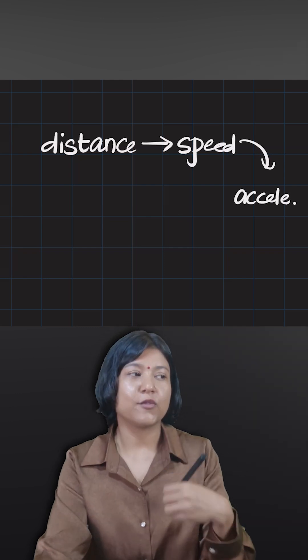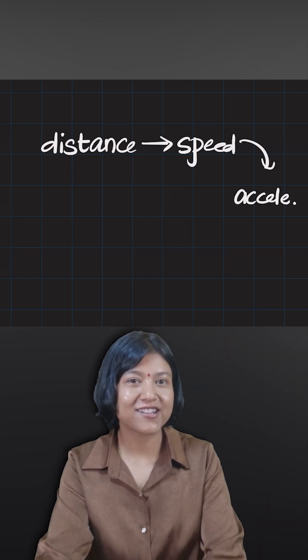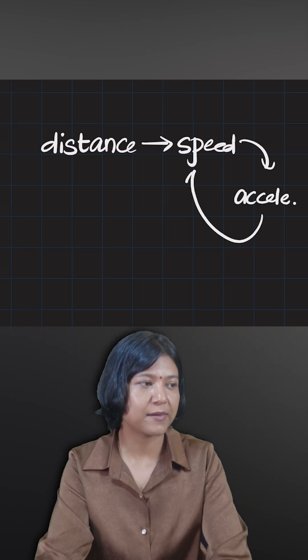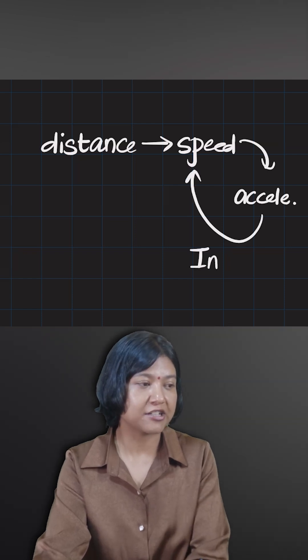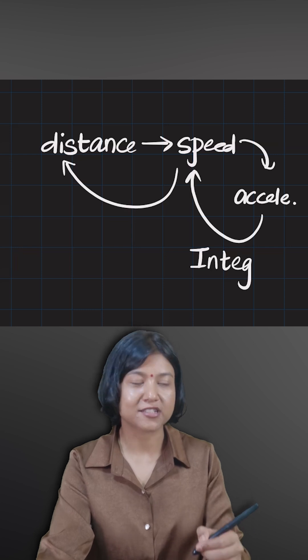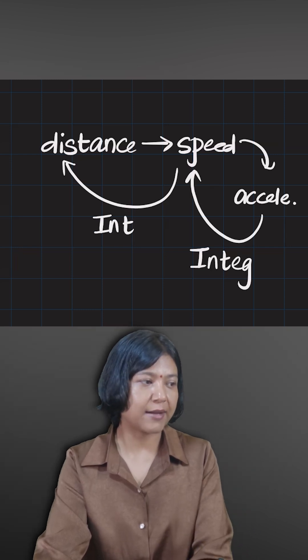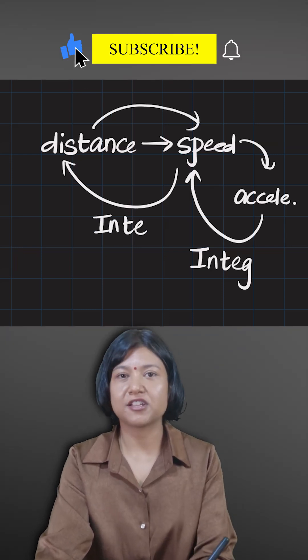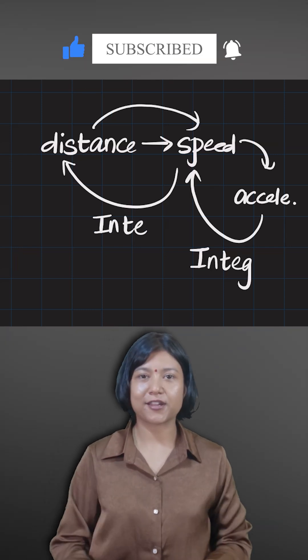But when you want to go backward, when you have the acceleration function and when you want to find the speed function, that is when you will integrate. And similarly, when you have the speed function and you want to go backward to find the distance, that is again when you integrate. So coming in the forward direction you are differentiating, and going in the backward direction you are integrating.